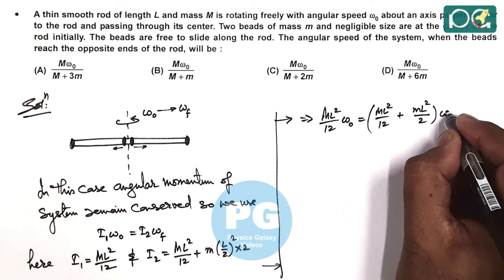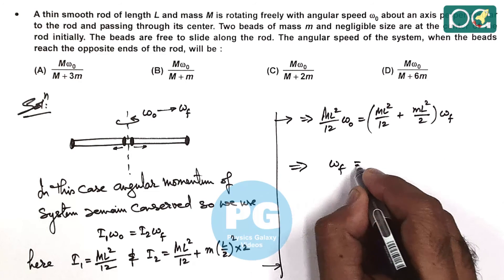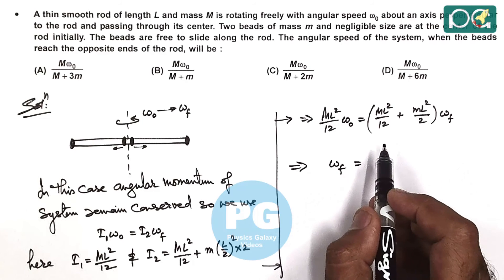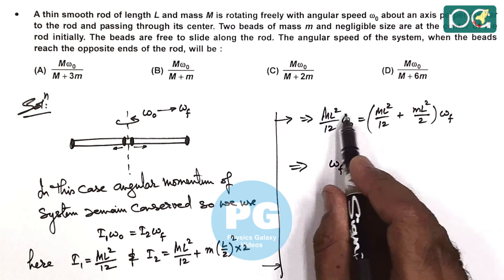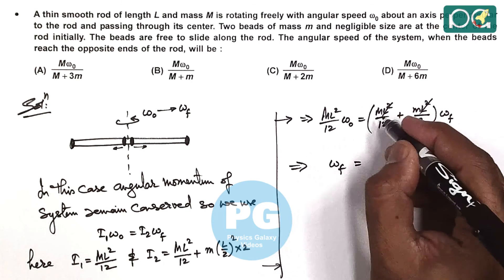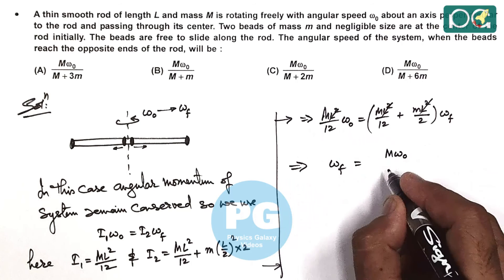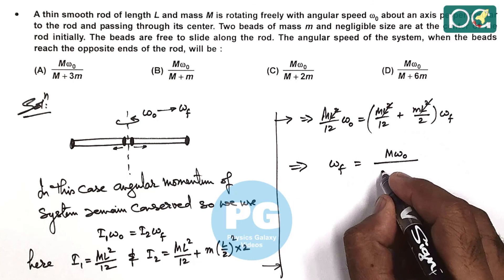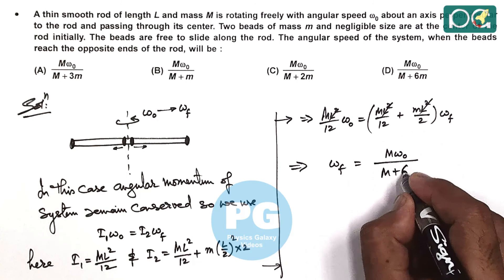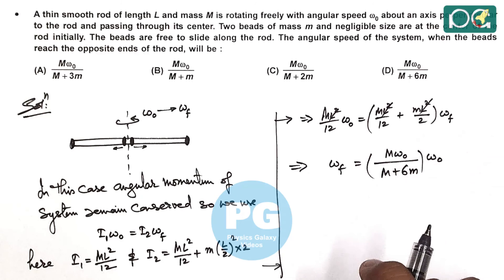Simplifying this gives us omega final is equals to, you can check the value we are getting is L square gets cancelled out. This is M omega naught divided by, here it is 6M plus M, so it is M plus 6M omega naught. This is what we are getting for omega final.